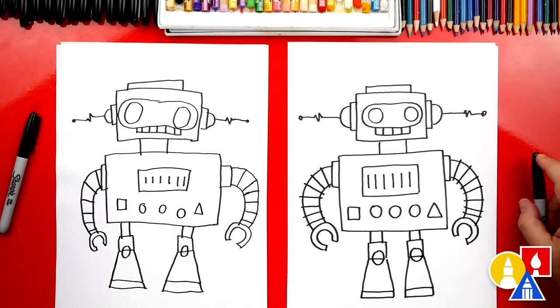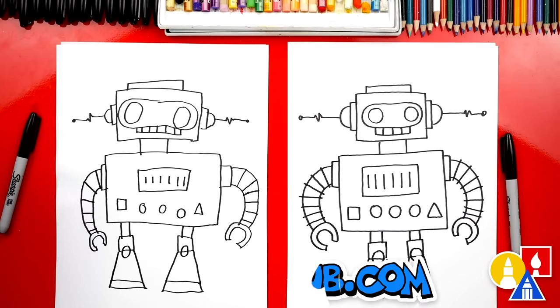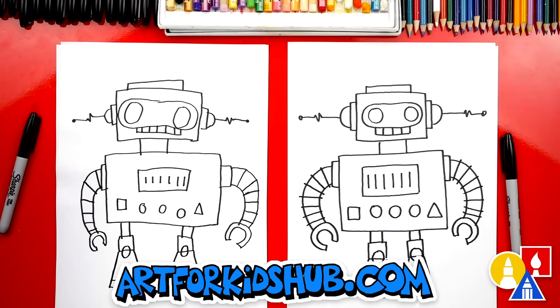But we still need to color it. This part, we're going to fast forward. But at the end, you can pause the video to match the same color, or you can color your robots any way you want. You ready to fast forward?